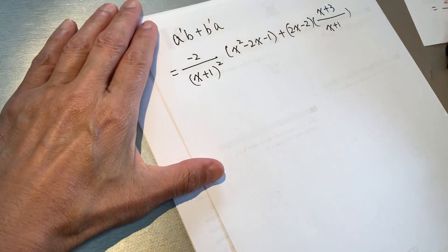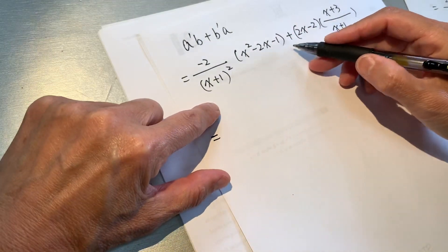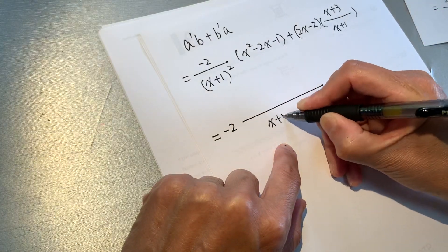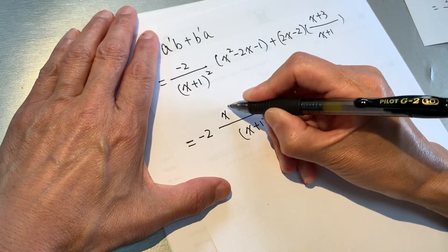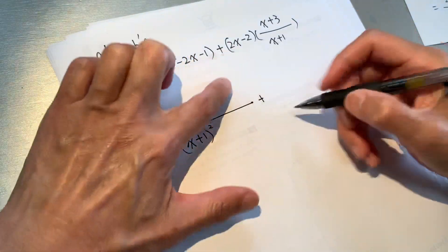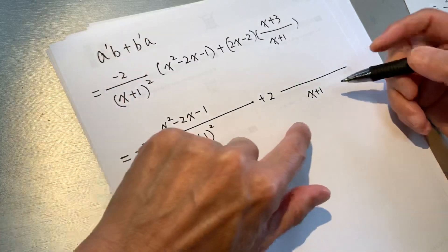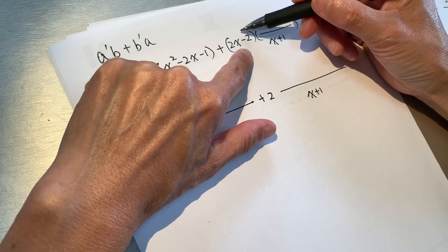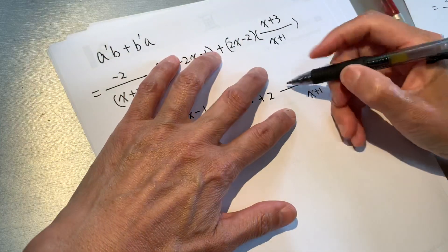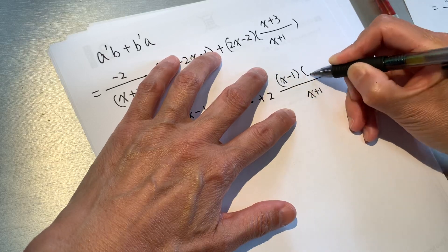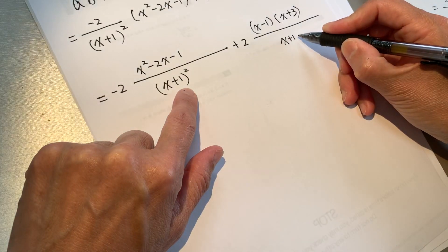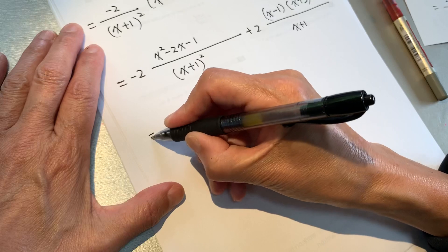Now we will do the simple arithmetic. On the first part we take out the negative 2 — because in mathematics the simpler the number, the easier you do it. And here we can take out 2, giving 2 times x plus 1. And for the other factor we can write x minus 1 times x plus 3. This way we can see clearly — and this is x plus 1 squared.